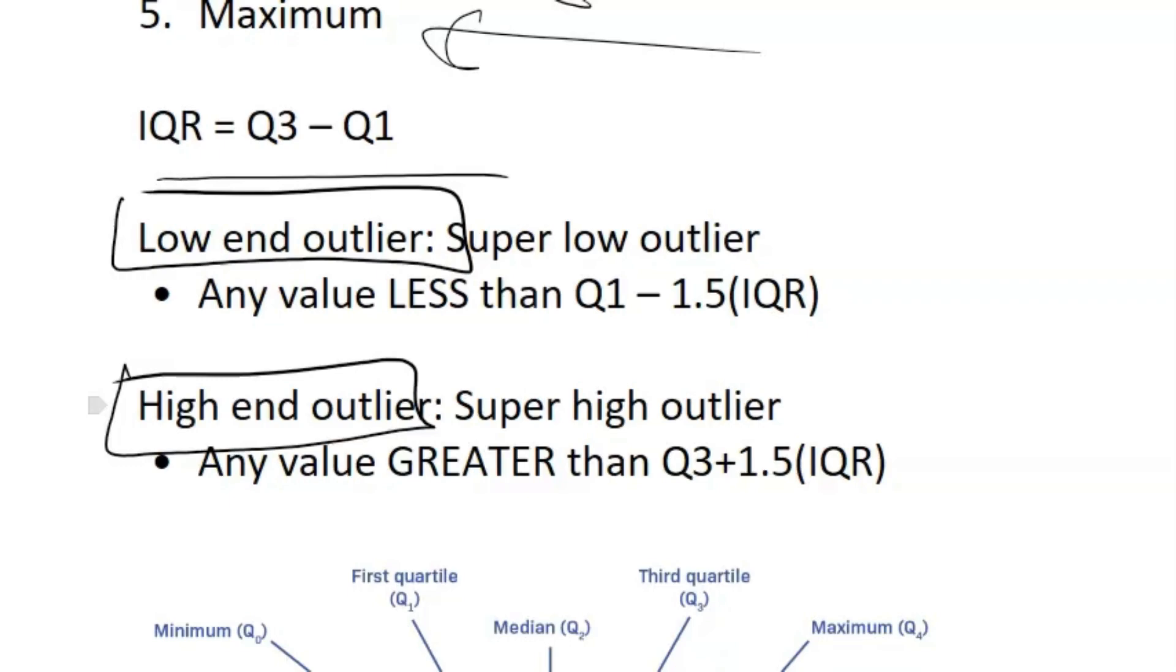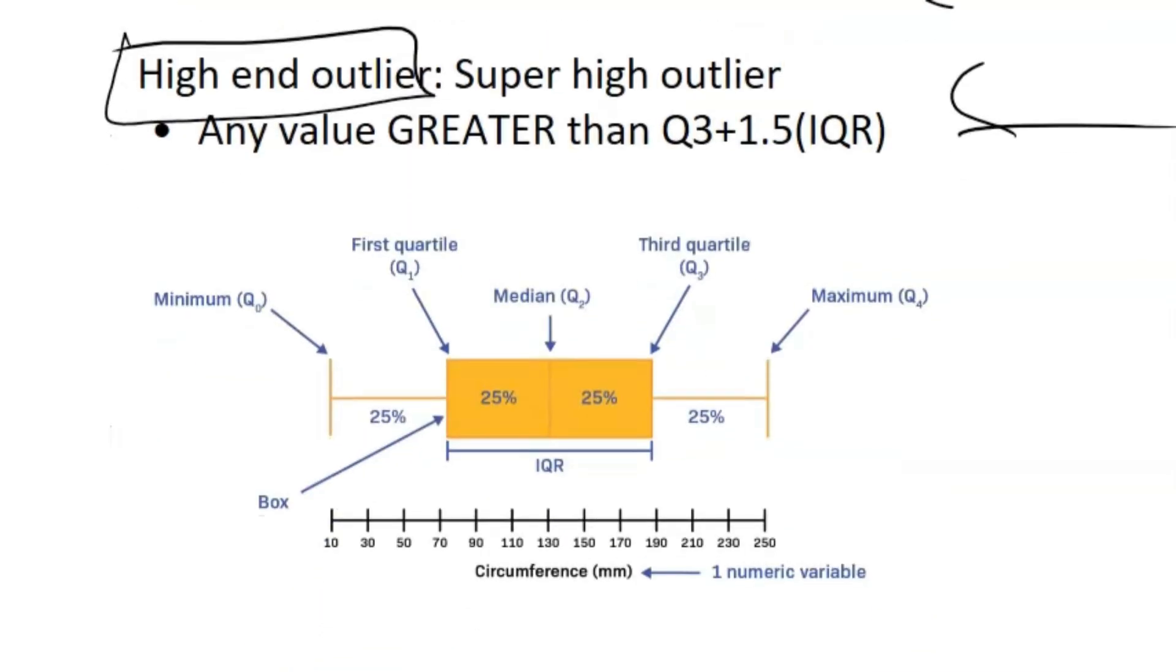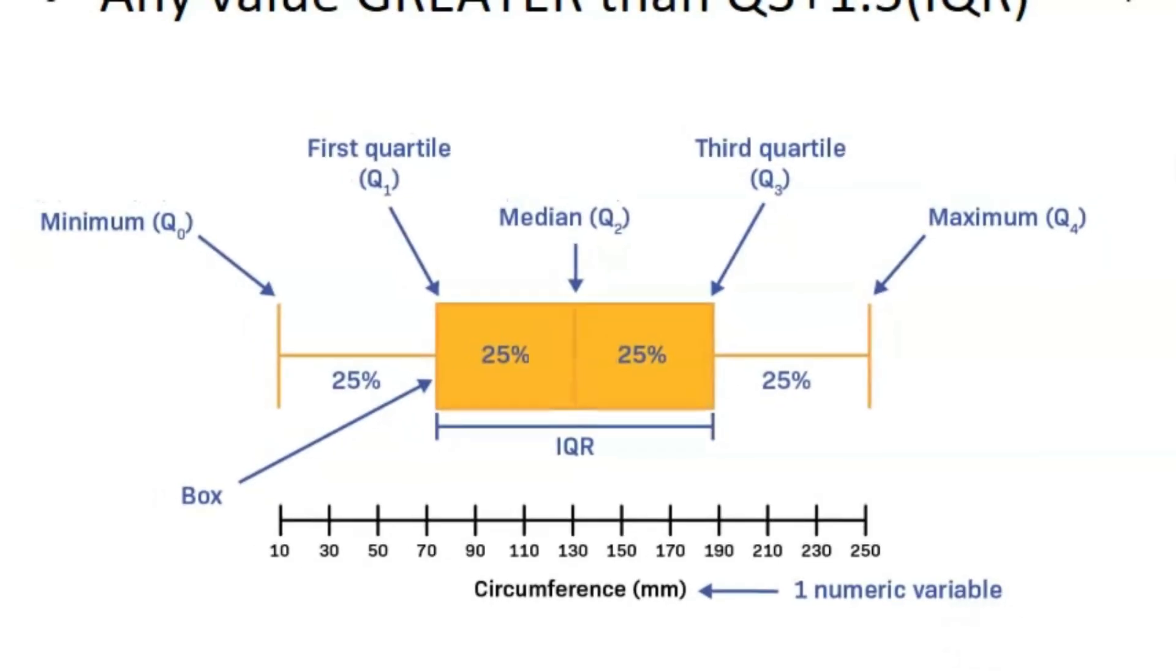So low-end outliers, like the name suggests, is just a super low outlier. So that's going to be any value less than Q1 minus 1.5 times the value of IQR. And the same thing for high-end outliers. That's a super high outlier. That's any value greater than Q3 plus 1.5 times IQR. So make sure you know those two equations. And here we just have a visual diagram because box plots are cool to draw.